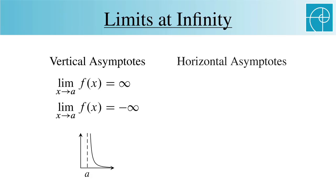But what about horizontal asymptotes? If we just switch a and infinity in the equations for vertical asymptotes, then we get these, which are the ones for horizontal asymptotes.